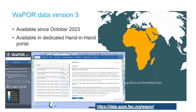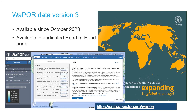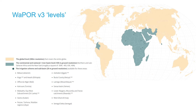A new version of WAPOR, version 3, was released in October 2023. This data is available in a dedicated hand-in-hand portal, available through the presented link. WAPOR version 3 now provides data for the entire globe at 300-meter resolution. The level 2 data of 100-meter resolution is available for the old WAPOR extent of Africa and the MENA region. Level 3 areas will remain available for specific areas only. The temporal availability of the version 3 data is from 2018 to present.